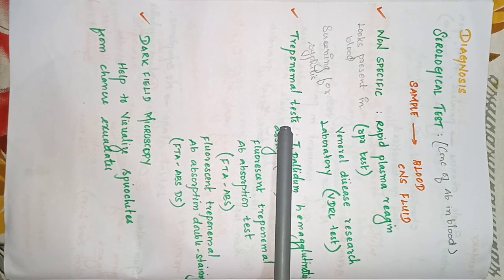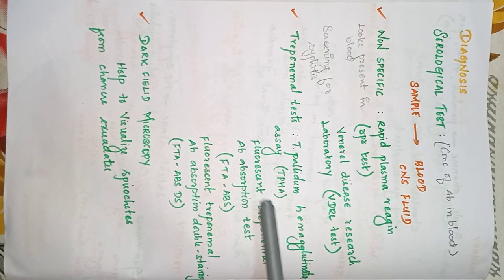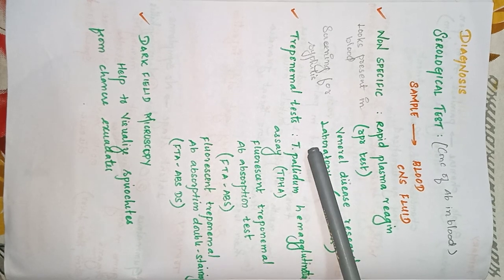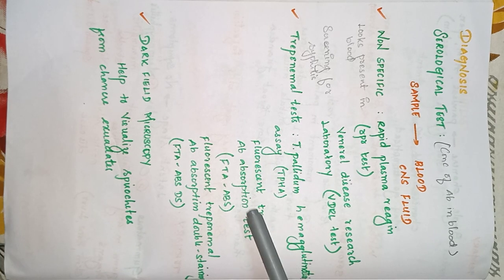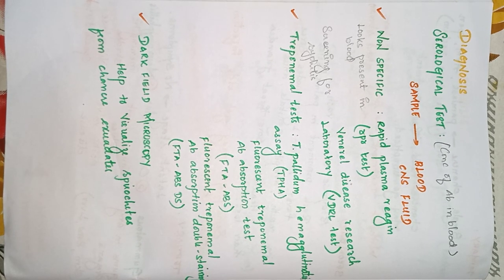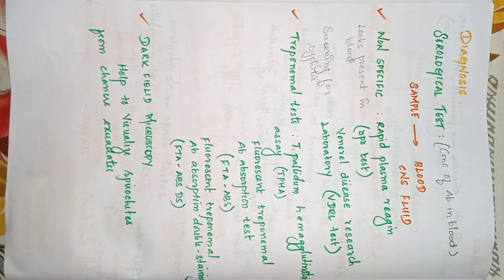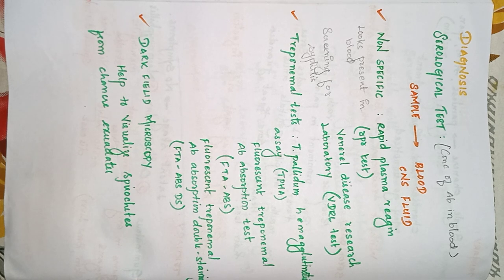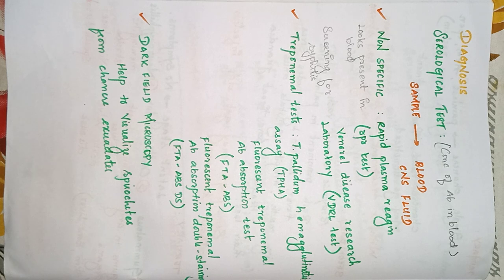After confirming the organism, treponemal-specific tests are performed: TPHA (Treponema pallidum hemagglutination assay) and FTA-ABS (fluorescent treponemal antibody absorption test), including the double-staining variant. Finally, dark-field microscopy is used to visualize spirochetes from chancre exudates.